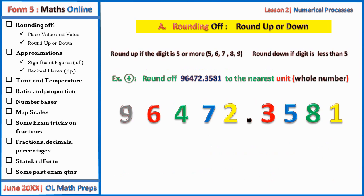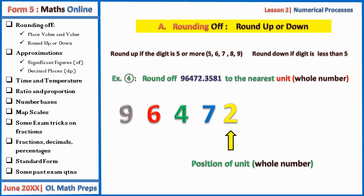Example four: round this number to the nearest whole number. The position of the whole number is at two. After the decimal point you have a value of three, so we round down — it will not affect the two. For the nearest whole number, the decimal point and everything after it should not be included, so this number becomes just two by wiping everything from the decimal point onwards.